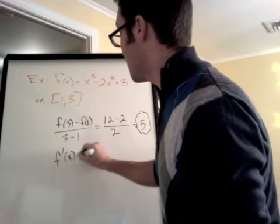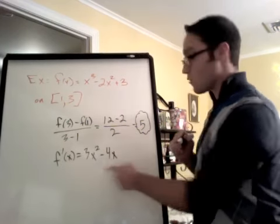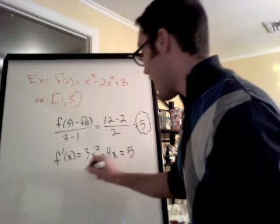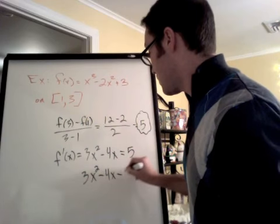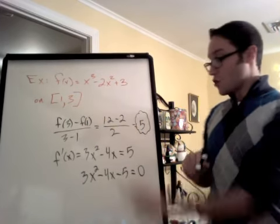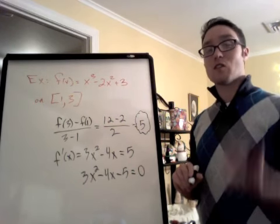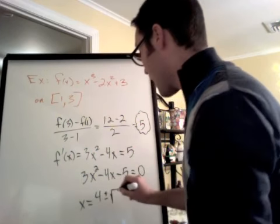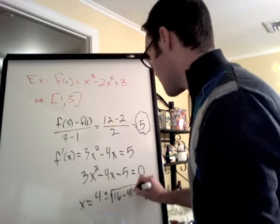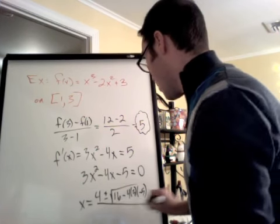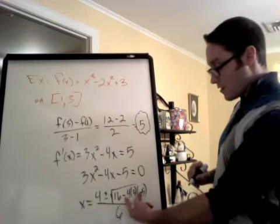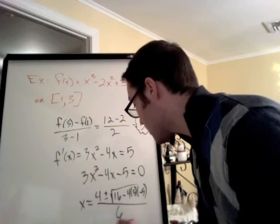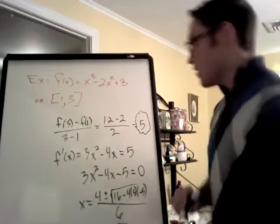f'(x) = 3x² - 4x. That's the derivative. That's got to equal 5 somewhere. So I set it equal to 5. Now I solve this. I'm going to subtract this over. I can try to factor it, but I don't know if it factors because it's got a leading coefficient other than 1. So I'm going to use the quadratic formula. x = [4 ± √(16 - 4(3)(-5))] / 6. So I multiply these. It's going to be positive, plus 60. 16 + 60 = 76. So I get (4 ± √76) / 6.